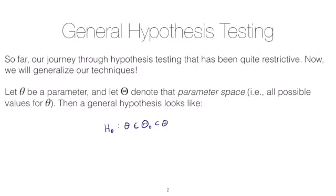And it's just defined as the values under the null hypothesis. And then the alternative is that theta is in the entire parameter space outside of capital theta naught. So this is really the complement of theta naught. And of course, this complement of theta naught is still a subset of the entire parameter space.